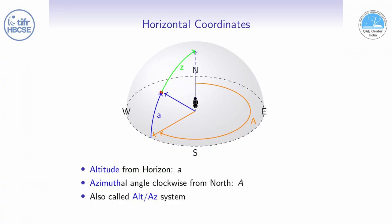If you measure distance of the star from zenith, continue the same arc along which you have been measuring altitude, continue the same arc towards zenith, this is known as zenith distance of the star. So zenith distance is nothing but 90 minus altitude.